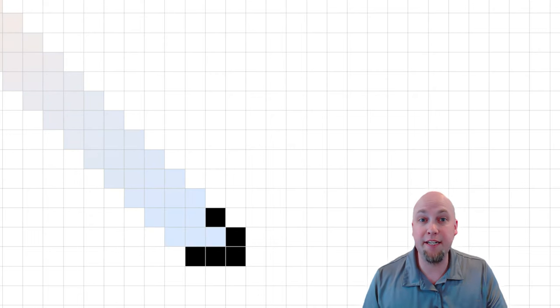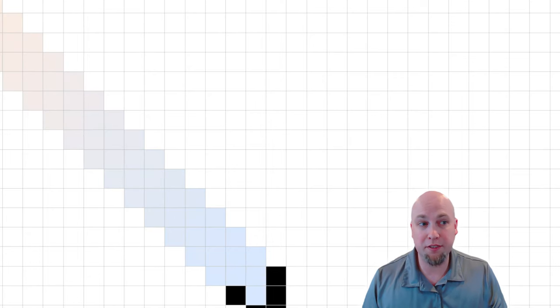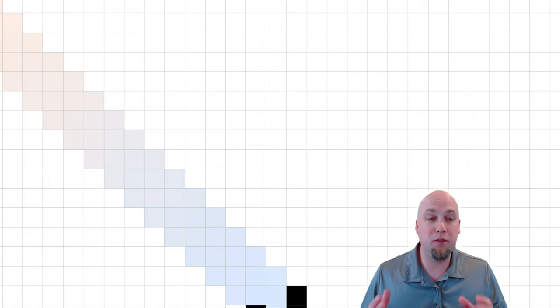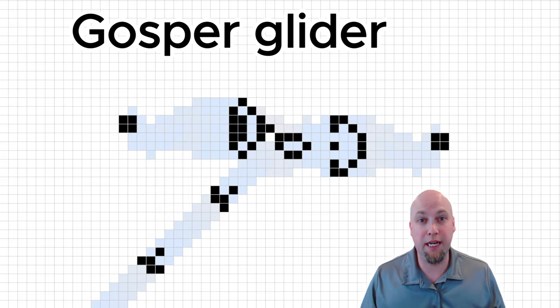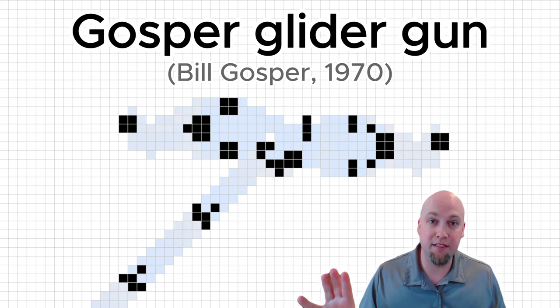And a glider gun, it's any stationary configuration that repeatedly emits these gliders. One of the most well-known patterns in all of life is the very first gun ever constructed, called the Gosper glider gun, found by Bill Gosper in 1970, way back in the early days of life.